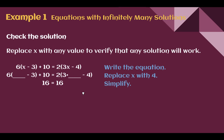Let's check to see if that's true. We can replace x with any value. I'm going to replace x with 4. 4 minus 3 is 1, 6 times 1 is 6, plus 10 is 16. On the right, 3 times 4 is 12, minus 4 is 8, times 2 is 16. To prove any number works, I'll also plug in 7: 7 minus 3 is 4, times 6 is 24, plus 10 is 34. On the right, 3 times 7 is 21, minus 4 is 17, times 2 is 34. A completely different number, and I still got the same thing on both sides — infinitely many solutions.